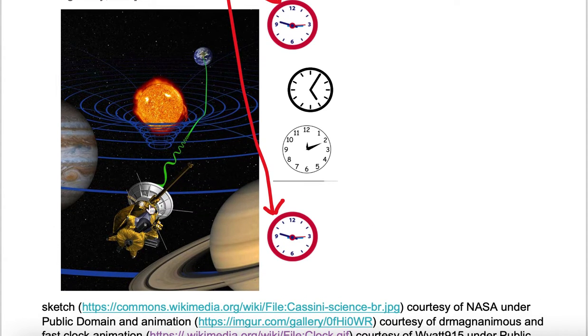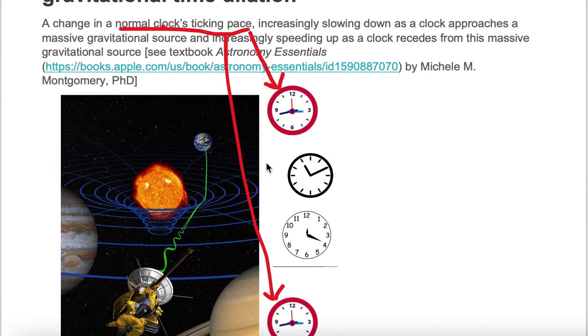If we were to take a clock and locate it at the space probe and send the clock along with the signal, as soon as the clock drops into the potential well, the clock ticking pace is going to slow down.